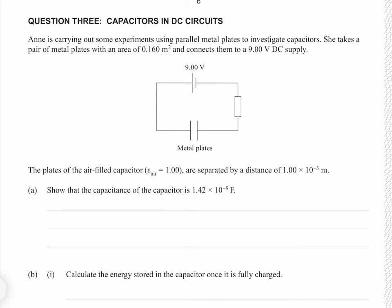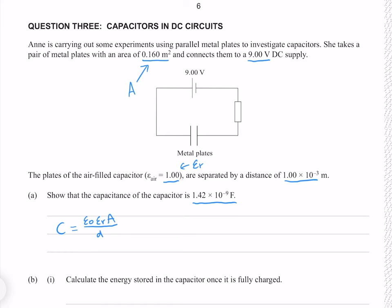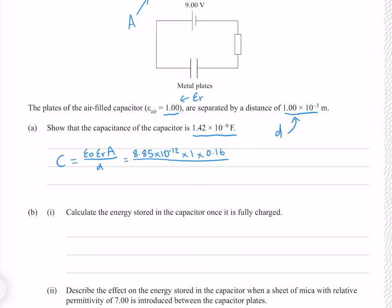Question 3. Ann is investigating parallel metal plates with an area of 0.160 metre squared, connected to a 9 volt DC supply. The air-filled capacitor has relative permittivity of 1 and plate separation of 1 times 10 to the minus 3 metres. The capacitance equation is C equals epsilon-0 times epsilon-r times A over d. Putting those values in gives 1.4160 times 10 to the minus 9 farads, or 1.42 times 10 to the minus 9 farads to 3 significant figures, which is what we're trying to find.